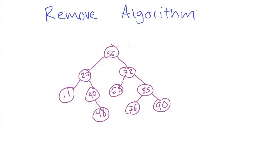Here I've drawn a binary search tree. The first thing we will need to do to remove a node is to find which one we want to remove. That will be done using the same binary search algorithm that we already talked about, and so we are going to identify the node that we want to remove — like we might want to remove this 11 node here, or this 40 node here, or this 85 node here. Then we come to the tricky part of the algorithm, which is when we have to actually remove it from the structure. So we're going to break this into cases based on how many children that the node has.